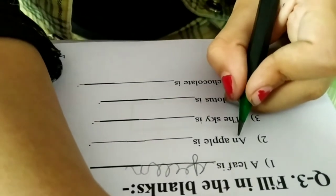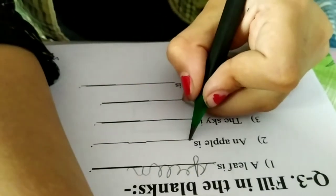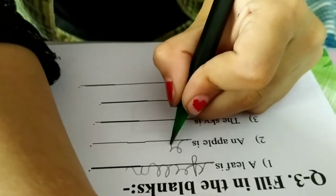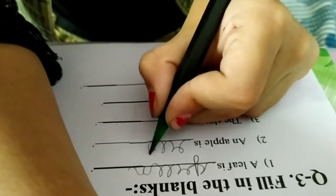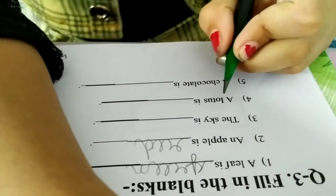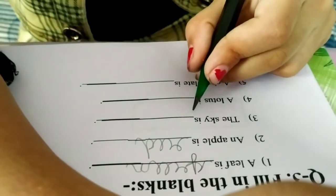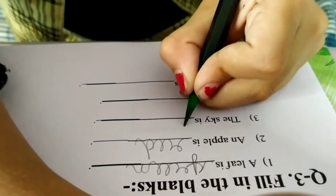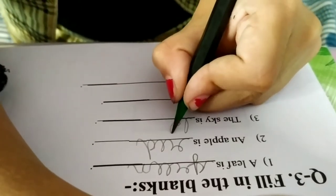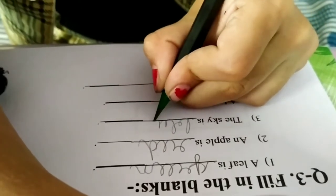An apple is red. R-E-D. Red. The sky is blue. B-L-U-E.